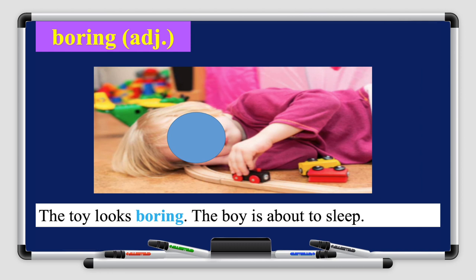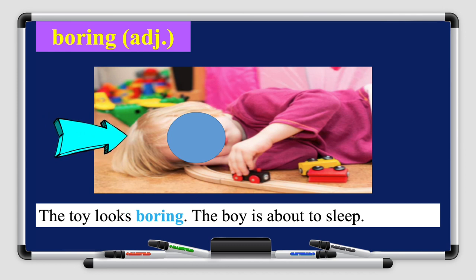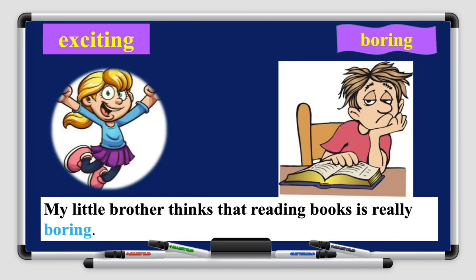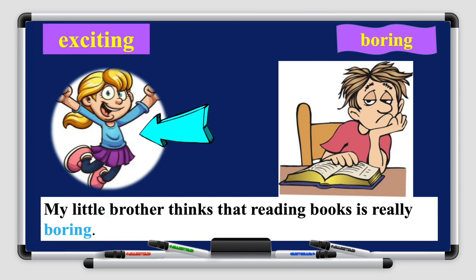The next word is 'boring' — boring and exciting are opposites, they are antonyms. Boring is an adjective. Let's read the sentence: the toy looks boring — the boy is laying on the ground trying to play with the toy but he's bored because the toy is boring. Another sentence: this is so boring, I wish I could do something more creative — this man is sitting at a desk holding papers, feeling bored because his job is boring. Another example: my little brother thinks that reading is really boring — the girl is jumping with joy while the boy is bored because he thinks reading is boring.